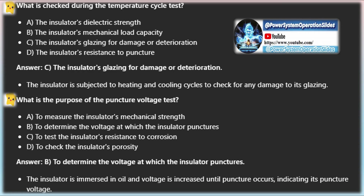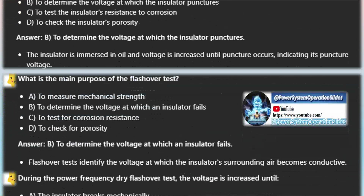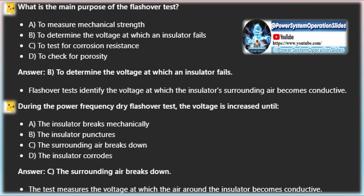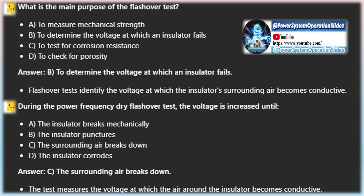Porosity test: a freshly manufactured insulator sample is broken into pieces. These pieces are then immersed in a 0.5% to 1% alcohol solution of fuchsin dye under a pressure of 150 kg per cm² for several hours, typically 24 hours. Afterward, the pieces are removed from the solution and examined for dye penetration, which indicates the degree of porosity.